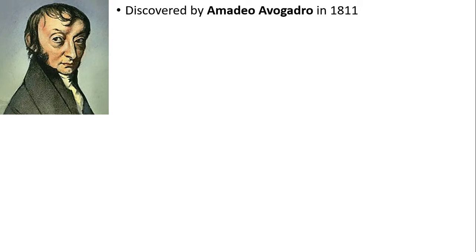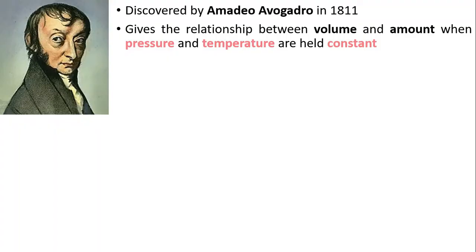So, this law is discovered by Amadeo Avogadro in 1811, which is famous for the Avogadro's number, right? If you remember that. So, this gives the relationship between volume and amount of gas when pressure and temperature are held constant.